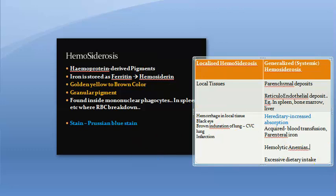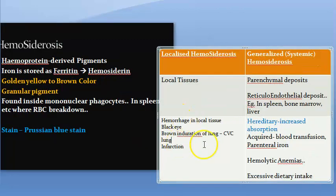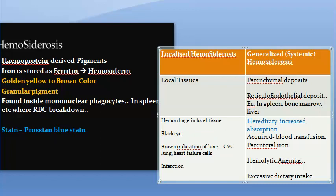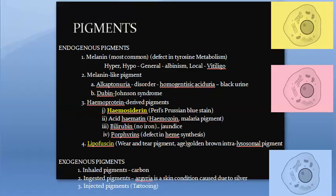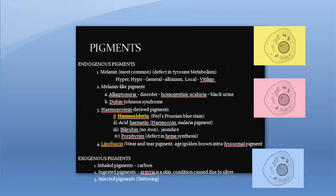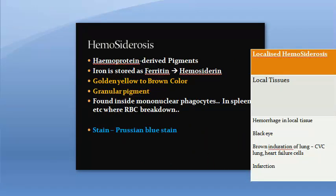In CVC lung, the hemosiderin will be within macrophages called heart failure cells. These heart failure cells in the lungs contain hemosiderin, which gives the appearance of brown induration of lung. This is an important exam point — look out for the CVC lung content. In this video we have covered pigments and hemosiderosis.